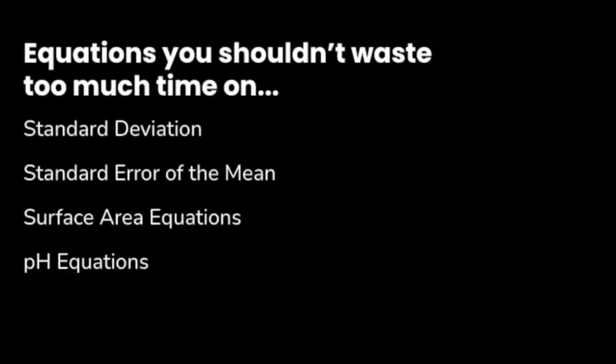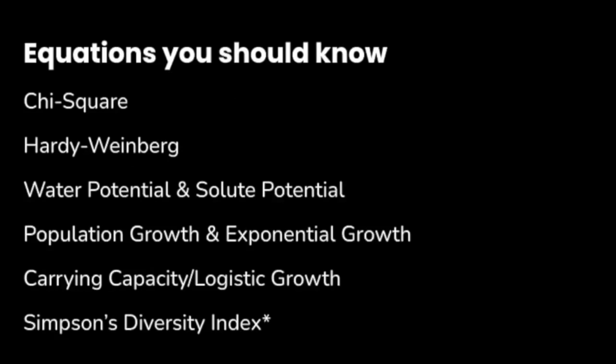As far as the math, there are some equations on your formula sheet that you probably shouldn't waste too much time on because it's not likely they'll show up on the exam: standard deviation, standard error of the mean, surface area equations, and pH equations. They are on the formula sheet, but it's not likely you'll see them on the test. Equations you should be familiar with are things like the chi-square, the Hardy-Weinberg equations, water potential, population growth, and carrying capacity, and maybe Simpson's diversity index, though it's probably not going to be on your test. I do have a longer video going through examples of each of these.